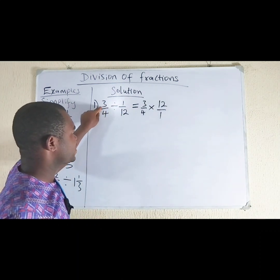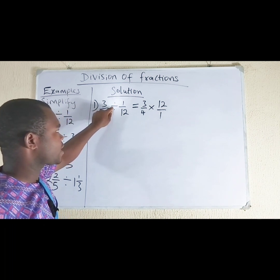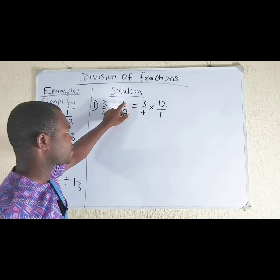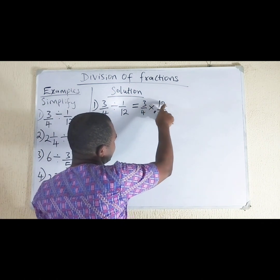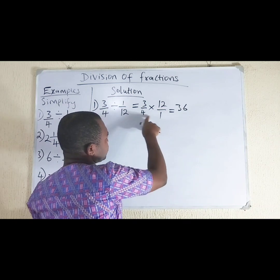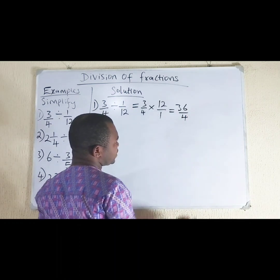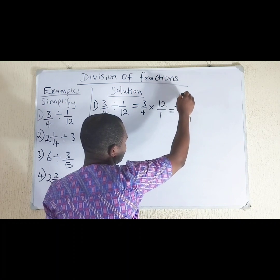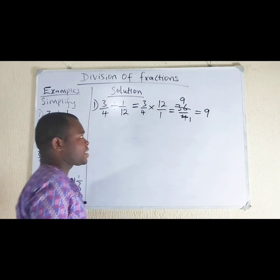When dividing a fraction by another fraction, the division sign changes to multiplication and we invert the fraction. So we have 12 over 1. Now, 3 times 12 gives you 36, and 4 times 1 gives you 4. You can divide: 4 divides itself 1, and 4 divides 36 to give you 9. So the answer is 9.